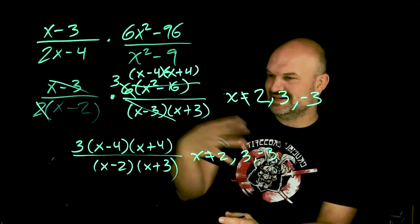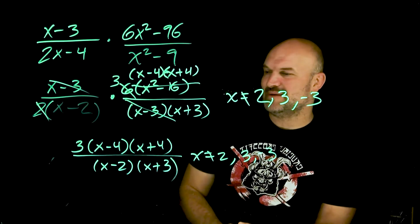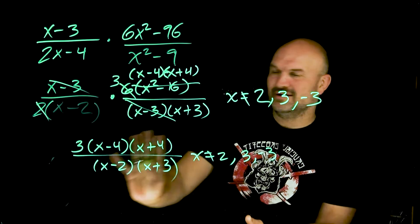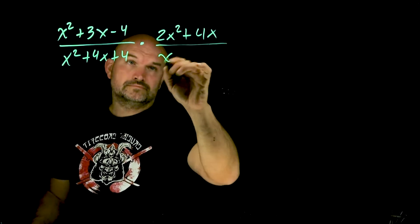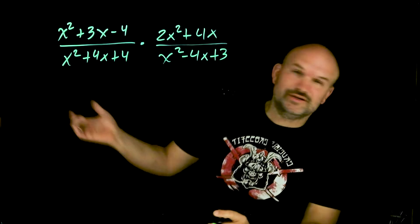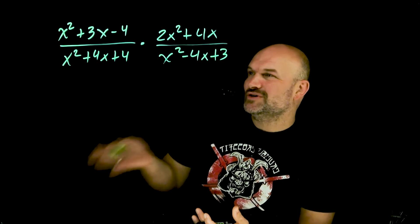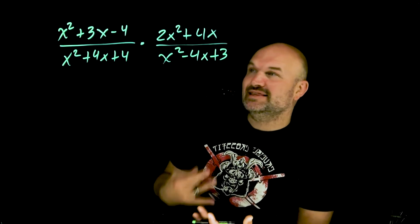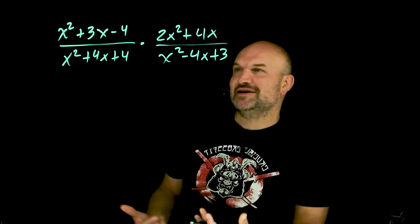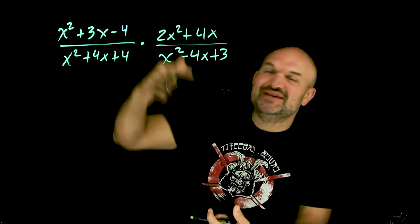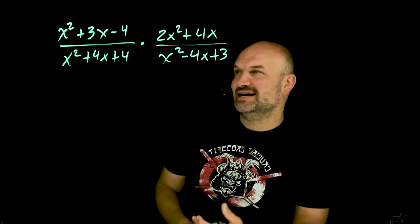The nice thing about multiplying and dividing rational expressions is I don't expect students to multiply back out — rewrite in factored form and you're good to go. Now let's do another multiplication problem. This one involves trinomials, and that's where students really make mistakes in rational expressions: the amount of factoring required. We have four factoring problems here, so it's critical to have those basic factoring skills down pat.